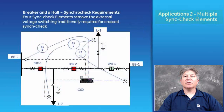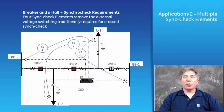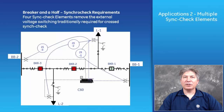Application 2: Multiple Sync Check Elements. The Sync Check Element monitors the voltage difference, phase angle, and slip frequency to ensure proper breaker closure. The UR firmware version 7 increases the number of Sync Check Elements from 2 to 4. Complex configurations like breaker-and-a-half line terminals or residual voltage automatic transfer schemes require more than 2 Sync Check Elements. UR devices with firmware version 7 deliver 4 independent Sync Check Elements, simplifying hardware requirements for these complex applications.